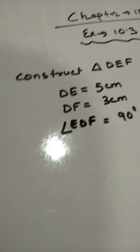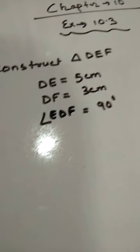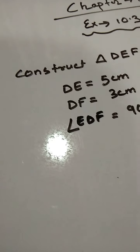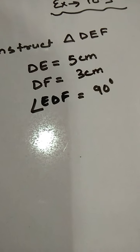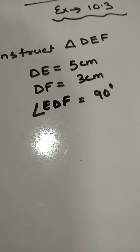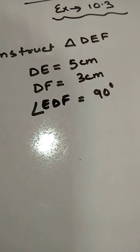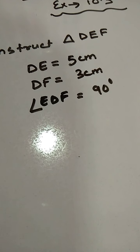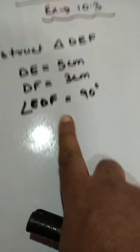Hello students. In this session I will explain question number 1 and 2 of exercise 10.3. In question number 1 we have to construct triangle DEF where the dimensions are given as DE equals 5 cm, DF equals 3 cm, and angle EDF is 90 degrees. Since one of the angles is 90 degrees, this would be a right angle triangle.